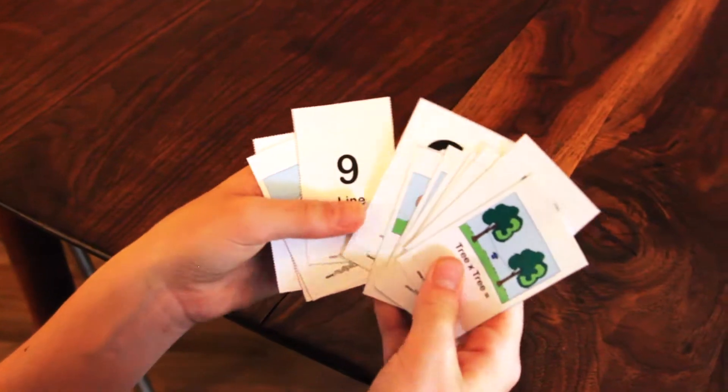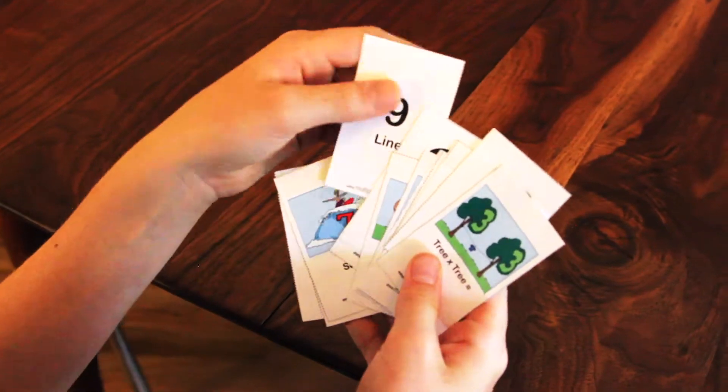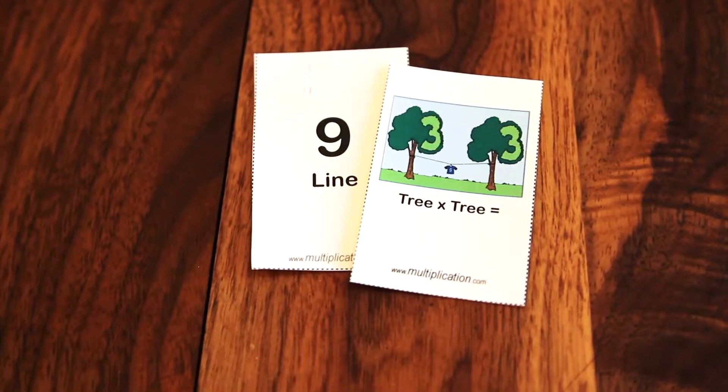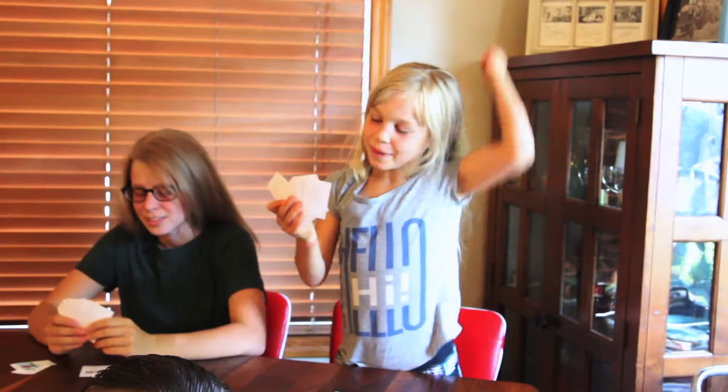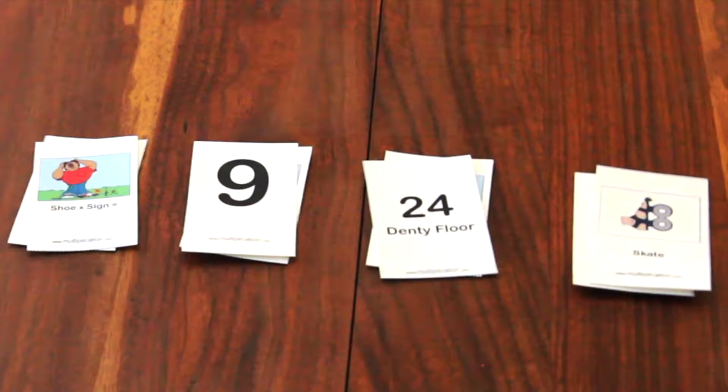Players take a look at their cards and if they see any of Multiplication.com's story pictures matched with the story answers, a pair is made and the player removes it from their hand and places it on the table in front of them.